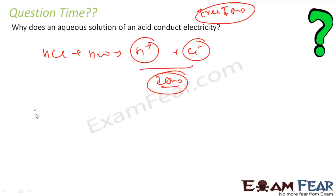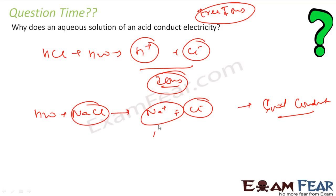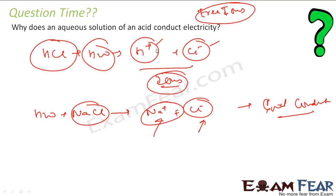If you take pure water, it will not conduct electricity. But the moment you put common salt in pure water, you get Na⁺ and Cl⁻ ions in the water, and these ions make it a good conductor. Similarly, you take pure water and try to connect electricity — it will not conduct. The moment you add acid to it, it gives H⁺ and Cl⁻ ions, and these ions are responsible for the conduction of electricity.